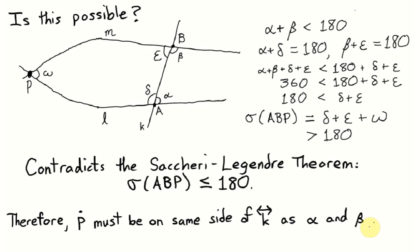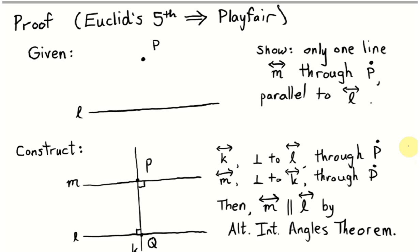Now, this is only the first half of our equivalency. We've shown that Playfair's axiom implies Euclid's fifth postulate. Now we must show that Euclid's fifth postulate implies Playfair's axiom. To begin this half of the proof, we assume that Euclid's fifth axiom is true, and we give the setup conditions for Playfair's axiom. We have a line L and a point P not on that line. We want to show that there is exactly one line through the point P that's parallel to L.